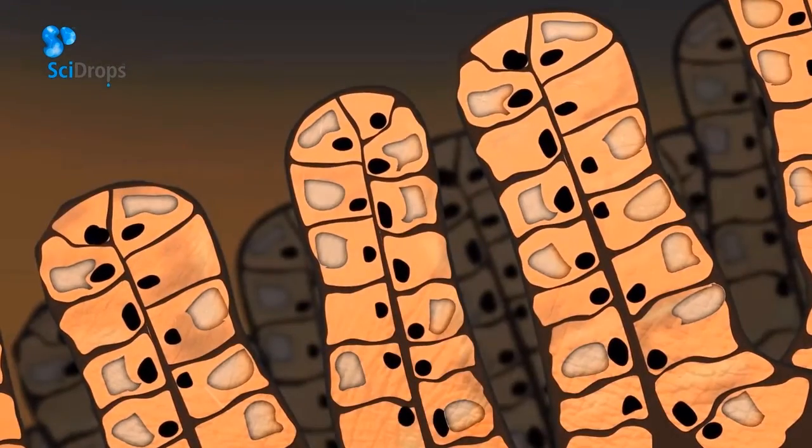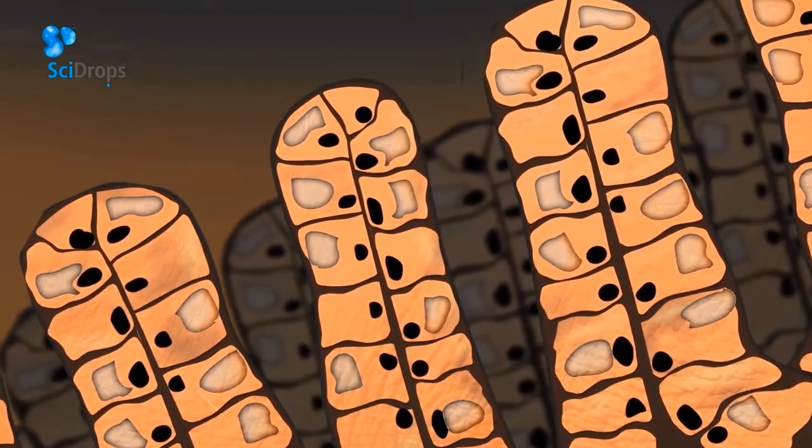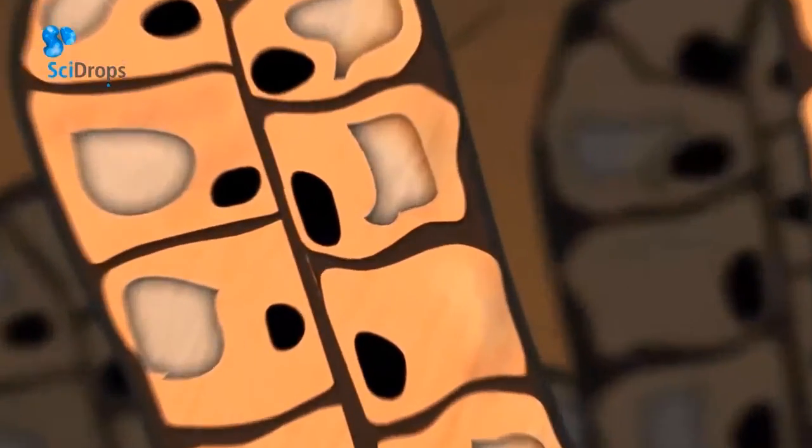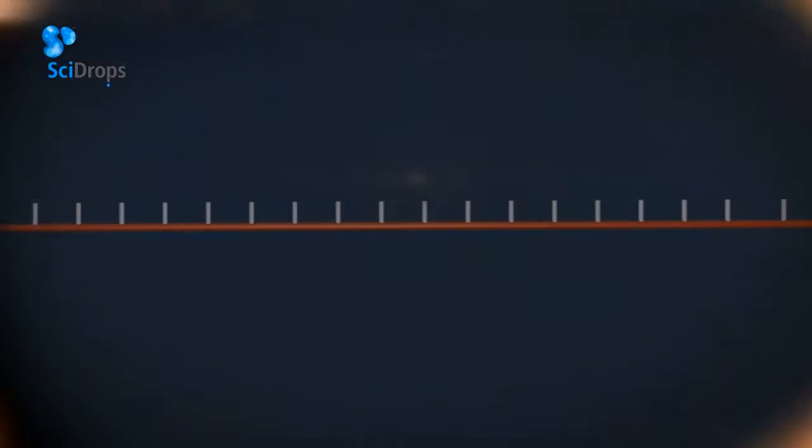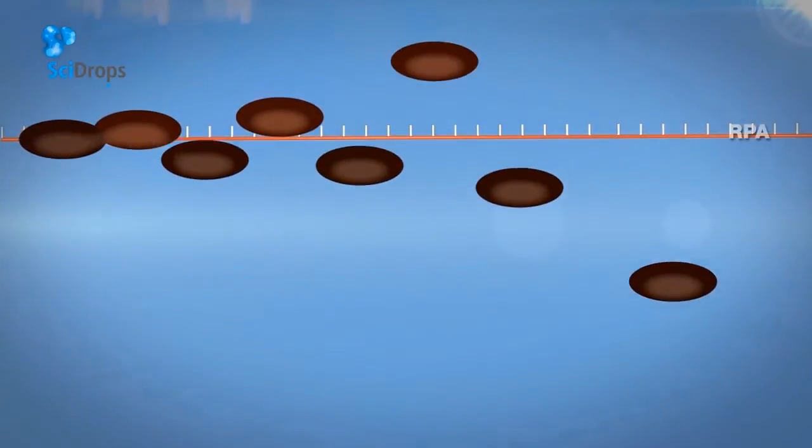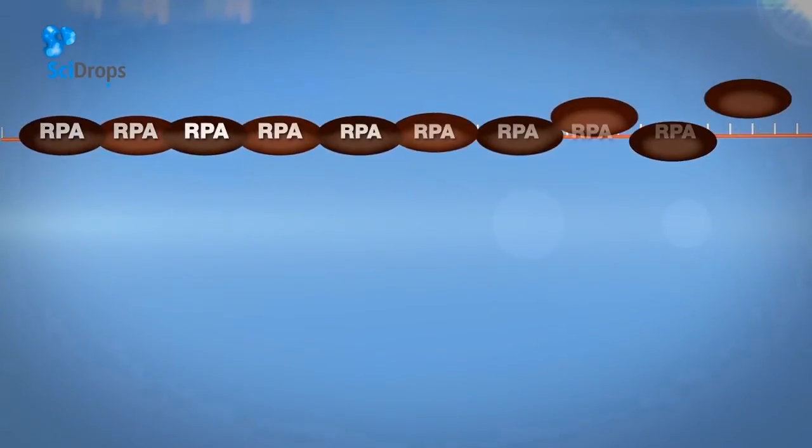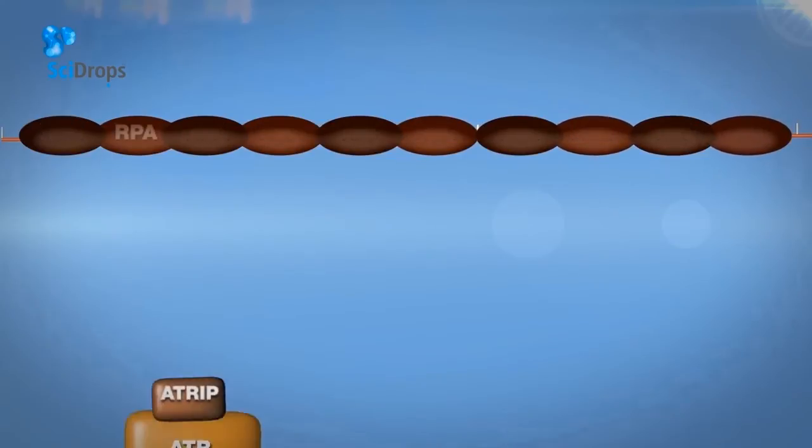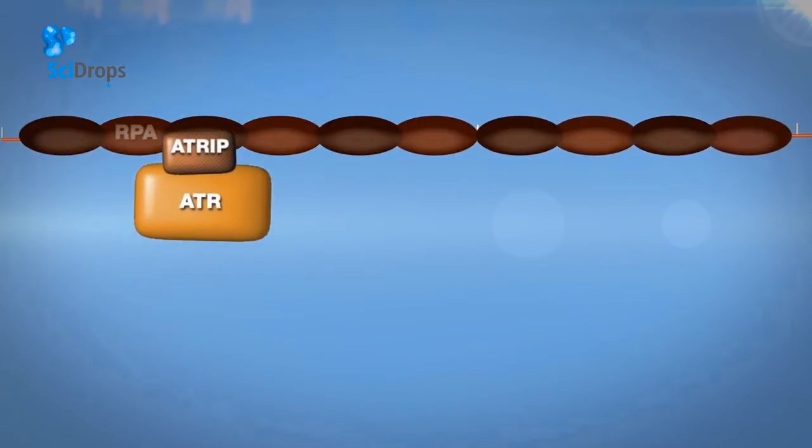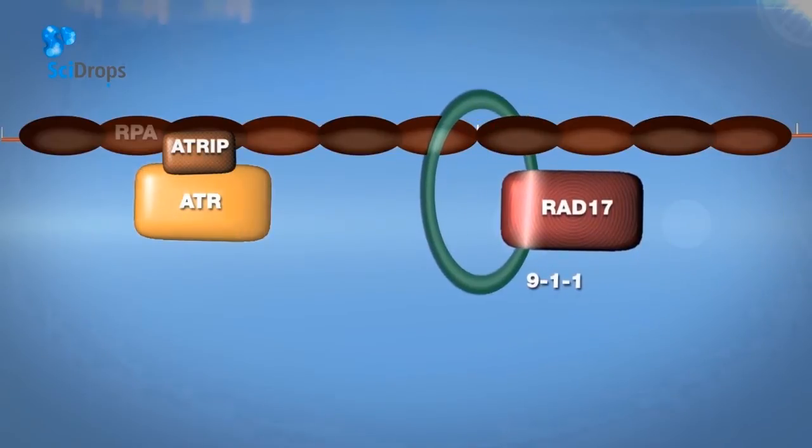Luckily, cells have evolved a very efficient network of proteins that detect and limit the presence of this problem. In cells, single-stranded DNA is rapidly coated by RPA. RPA-coated single-stranded DNA is then able to recruit the ATR kinase and its interacting partner ATRIP. RPA also recruits the so-called 9-1-1 complex through its binding to the loader RAD17.